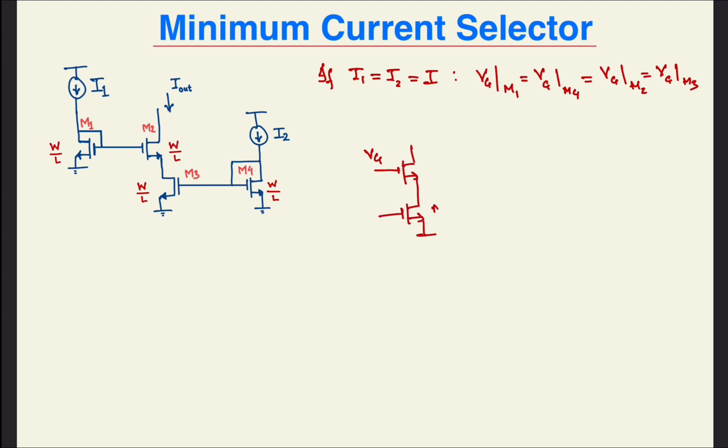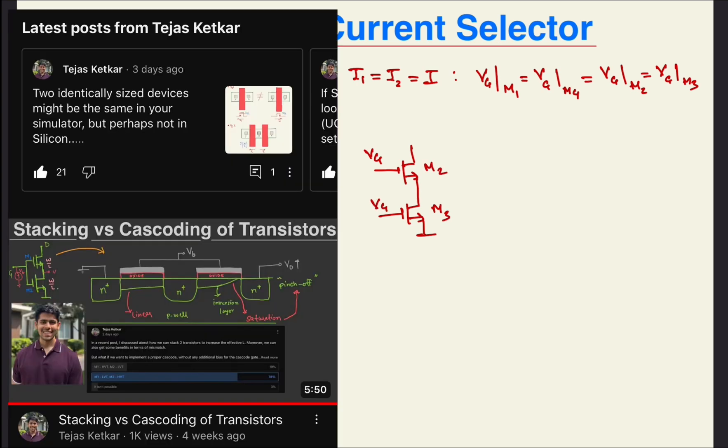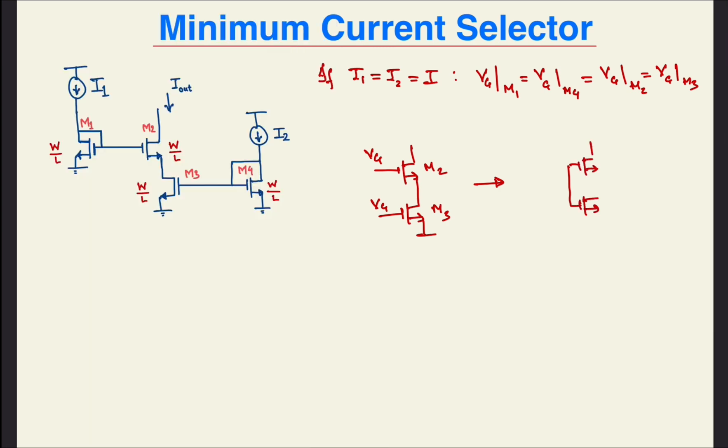If you didn't get this, I'd recommend that you watch my other video on stacking of transistors. That should make things clearer. Since M2 and M3 form a transistor with an effective aspect ratio of W over 2L, we can say that Iout is about I by 2, which is not what a minimum current function should have resulted in.